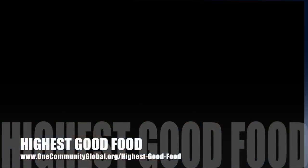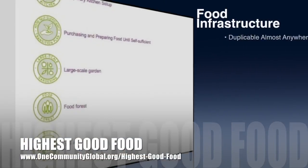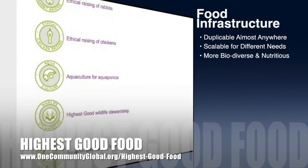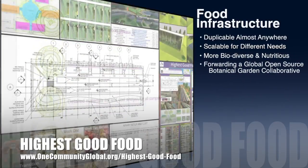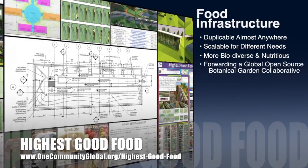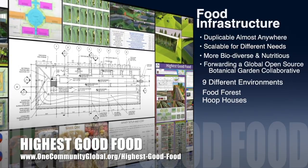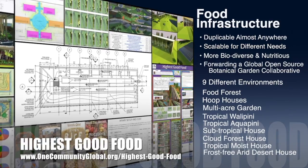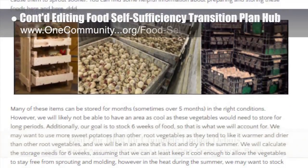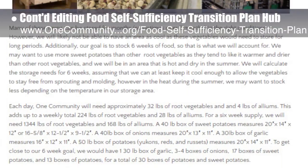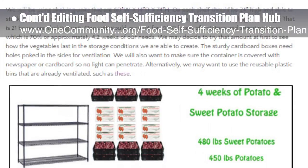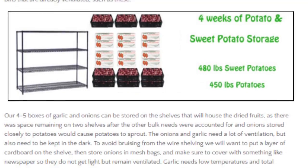OneCommunity's approach to highest good food is duplicable almost anywhere, scalable for different needs, more biodiverse and nutritious, part of forwarding a global open source botanical garden collaborative, and includes nine different free shared and duplicable growing environments. This week, the core team continued editing the food self-sufficiency transition plan hub page and the food bars page, and calculated the storage space needed for root vegetables.